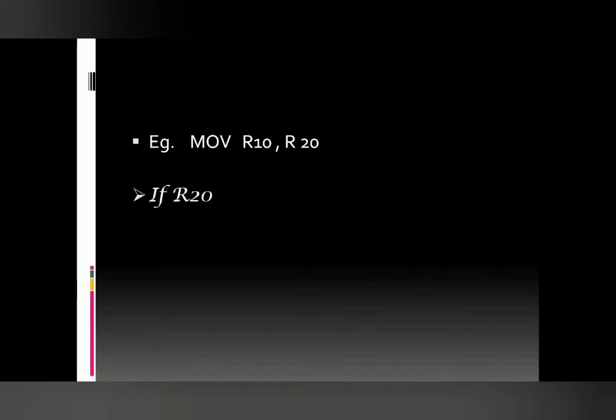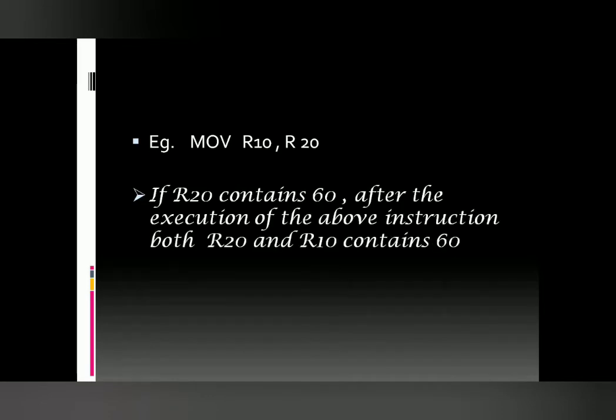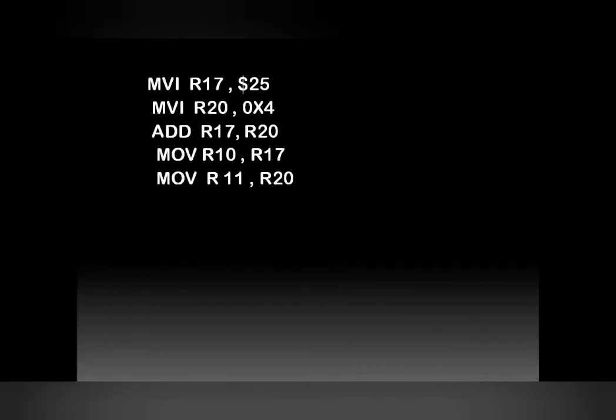For example, the MOV instruction is used to copy data among the GPR registers R0 to R31. Consider the example: MOV R10, R20 — whatever value is in register R20 is copied into register R10. Now for a combined example, suppose we want values in registers R11 and R25.